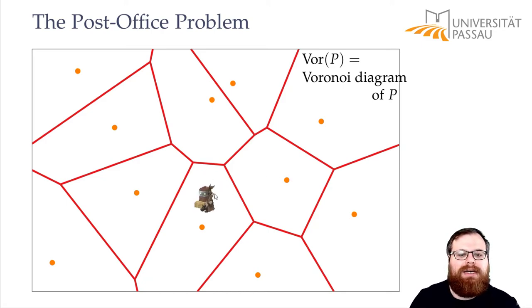If we are in some region here then this point is the closest to all the points in this region. For everybody in this region this is the closest of these orange points. For everybody on some boundary like here these two above have both the same distance. And if we are at a corner then even these three have the same distance.